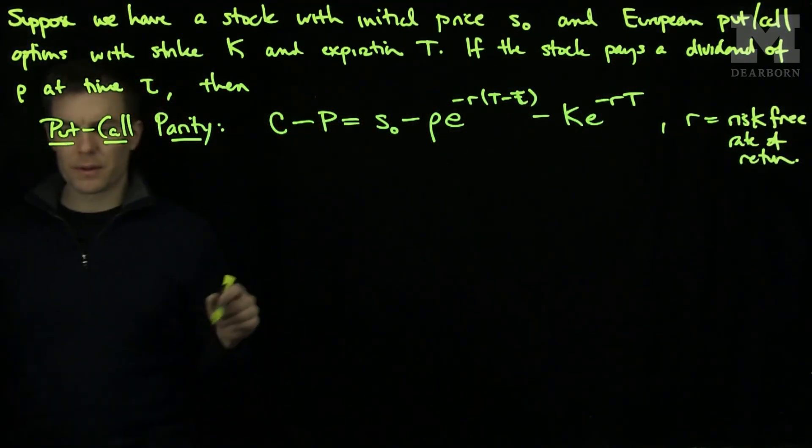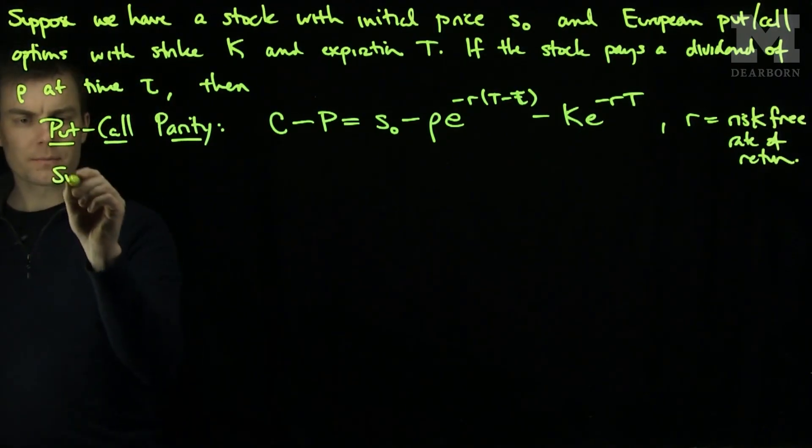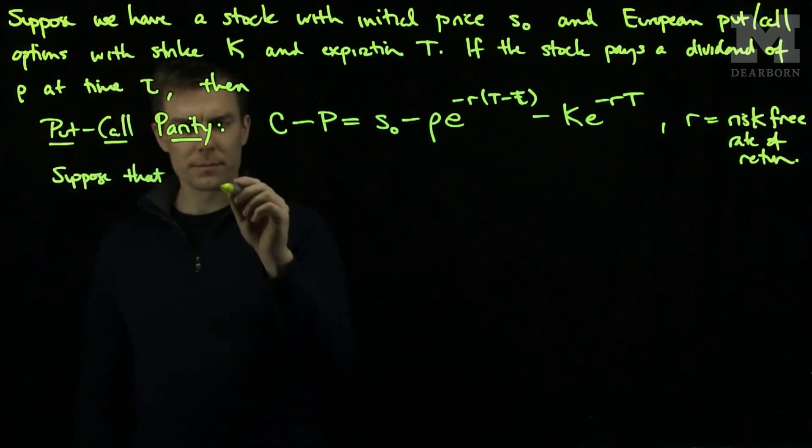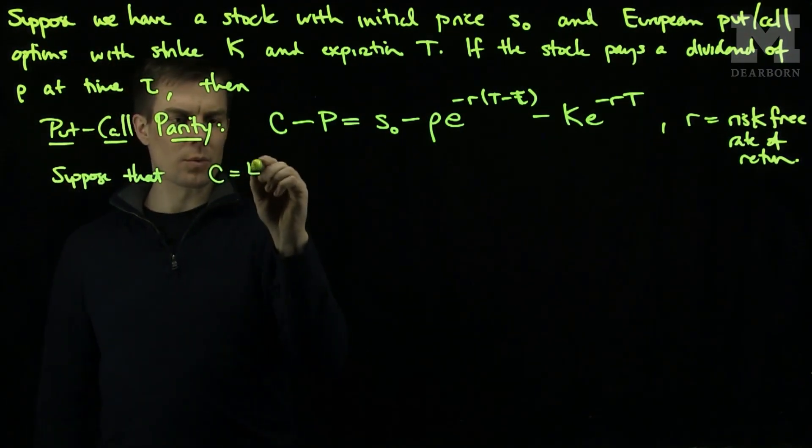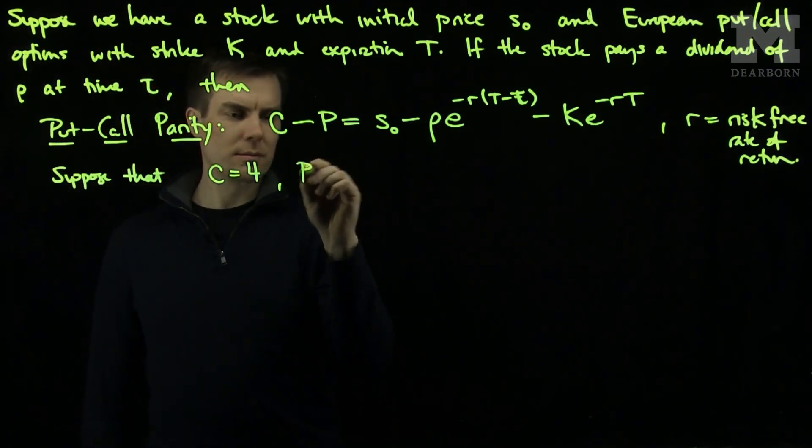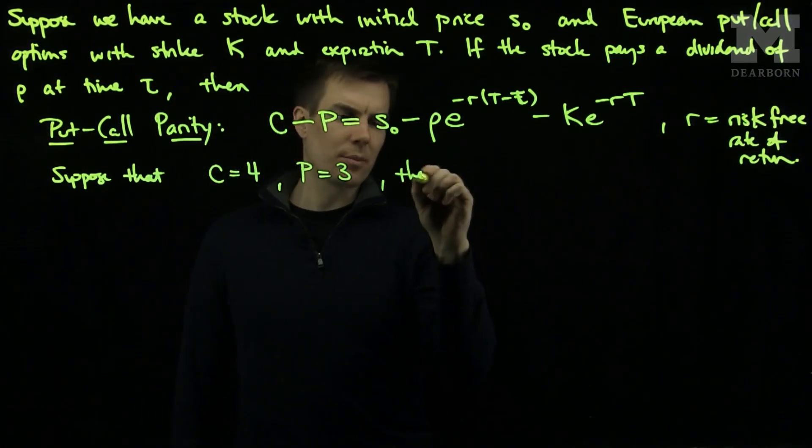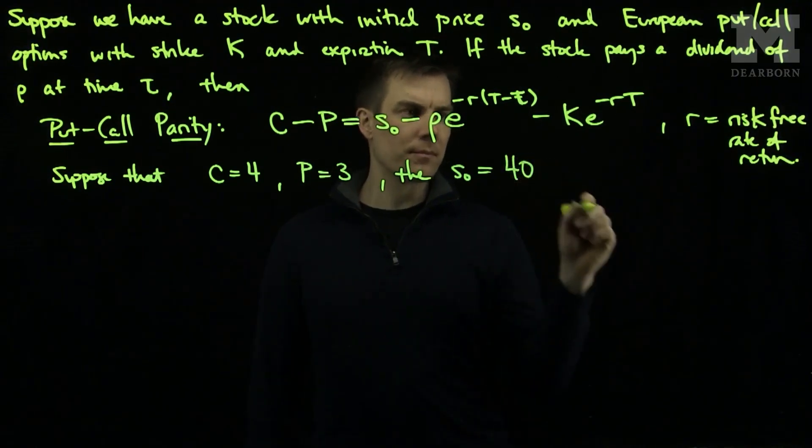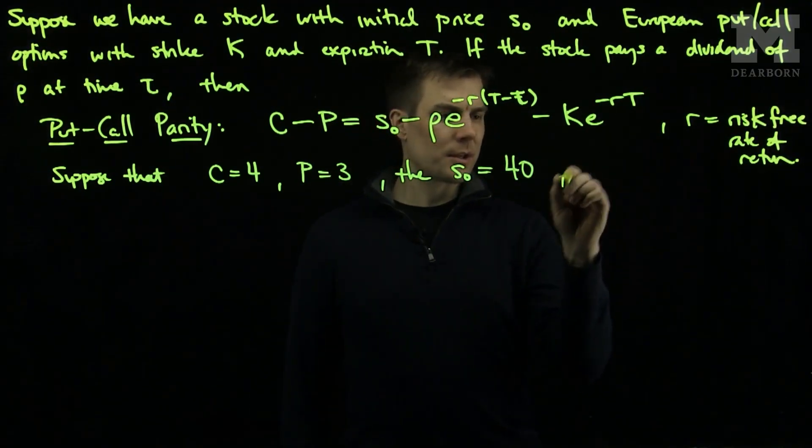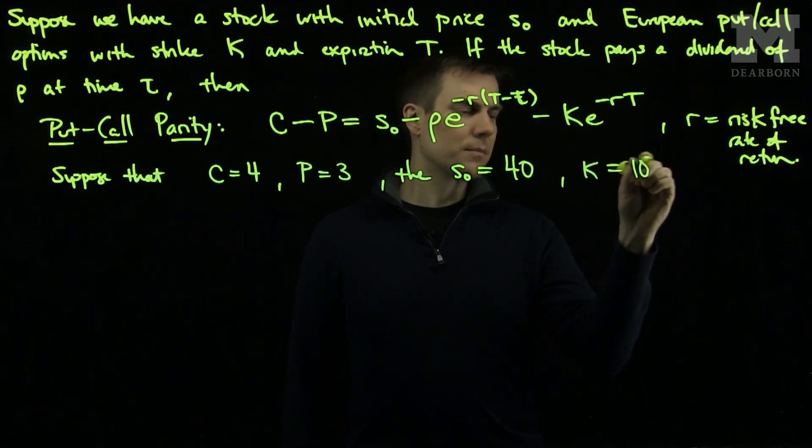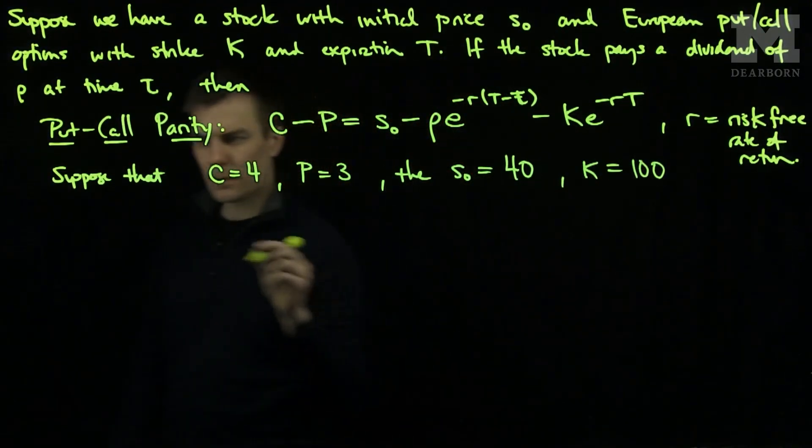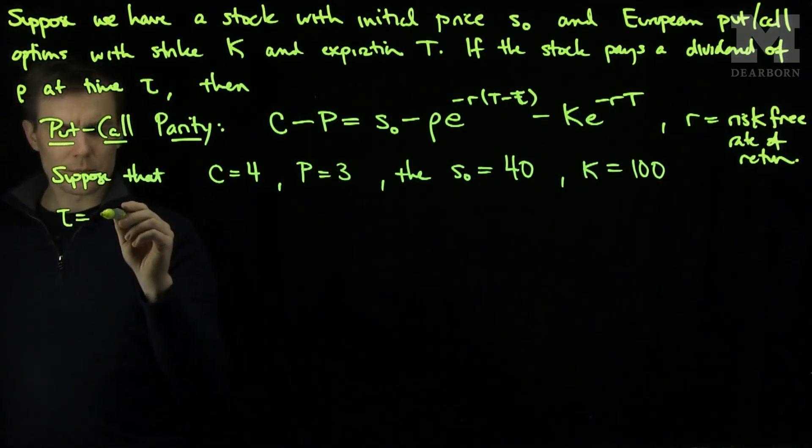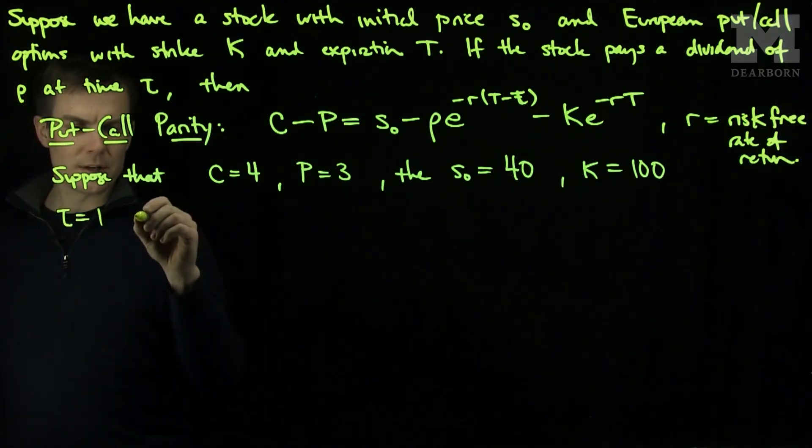So let's see an example of this. Suppose that the call is worth 4, the put is worth 3, the initial stock price S0 is worth 40, the strike price K is 100, tau equals 1 and t equals 2.